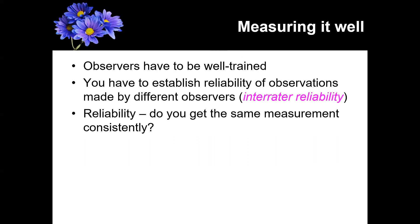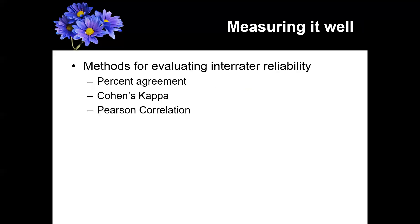When you do an observational measure, typically what happens is you'll have your grad students watch and run the experiment and keep track of the behaviors, but you'll of course train them on what exactly the behaviors are and what they should be looking at. There are also other ways to examine the reliability of your observers — this also applies to open-ended questions. There are a few different things related to inter-rater reliability that we'll talk about next.